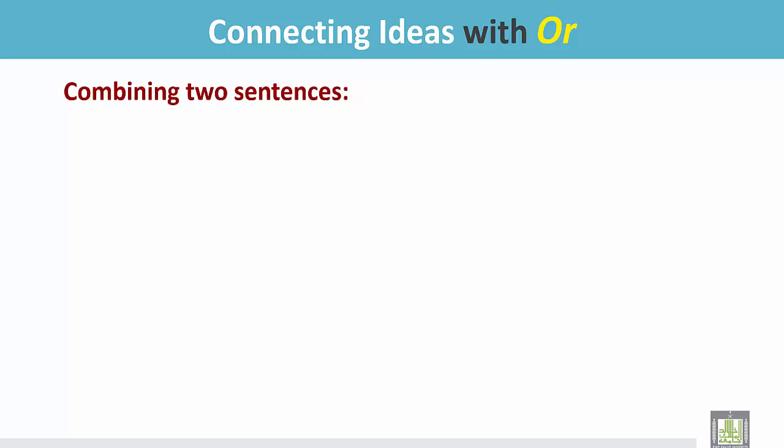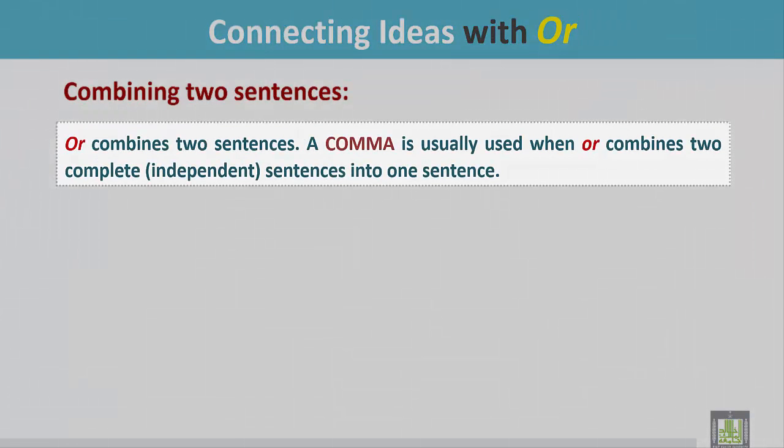Combining two sentences. OR combines two sentences. A comma is usually used when OR combines two complete independent sentences into one sentence.